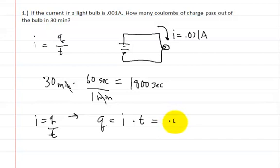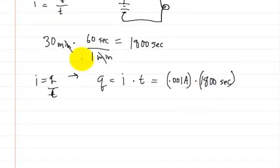And so the current is equal to .001 amps multiplied by the time, which is 1,800 seconds. And so this is going to be the charge, which is equal to 1.8 coulombs.